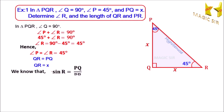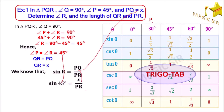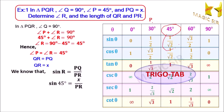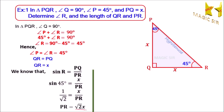We know that by the definition of sine, sine R is equal to PQ upon PR, where angle R is equal to 45 degrees and PQ is equal to X. So sine 45 degrees is equal to X upon PR. Now look at the Trigo tab. In the first row, theta is equal to 45 degrees, and in the second row, sine theta is equal to 1 upon root 2. So we write sine 45 degrees equals 1 upon root 2, therefore 1 upon root 2 equals X upon PR, giving PR equal to root 2X.